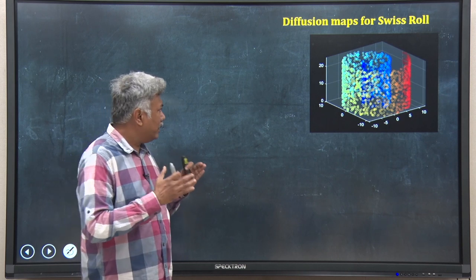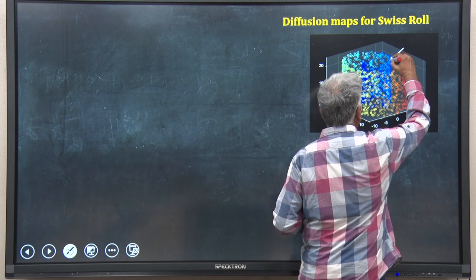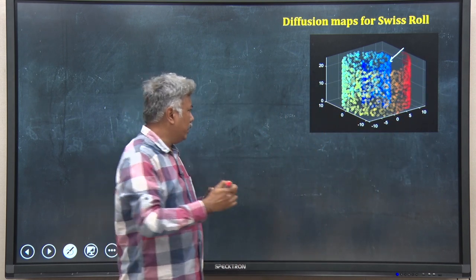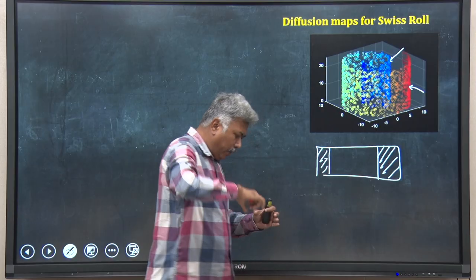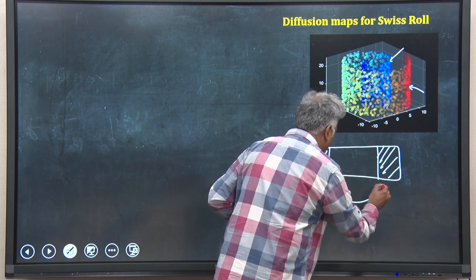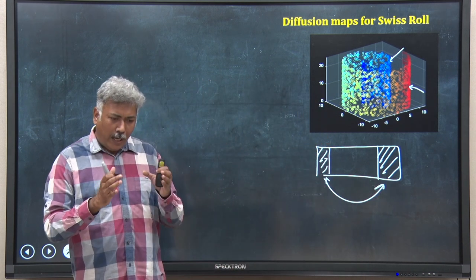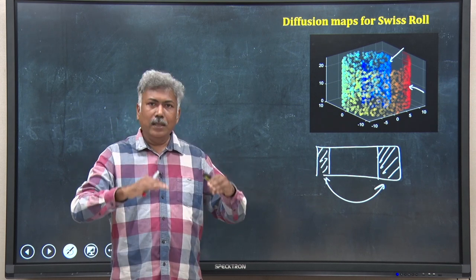In this data, I have color codes. These blue data points are locally close to each other — if I draw the original structure, this blue data point may be somewhere here. Whereas this red data point is at another end and they are also very close to each other. But when I rolled them together into a Swiss roll structure, these two things have come close to each other. Now I want to get back to the original local structure of the data by using diffusion maps.